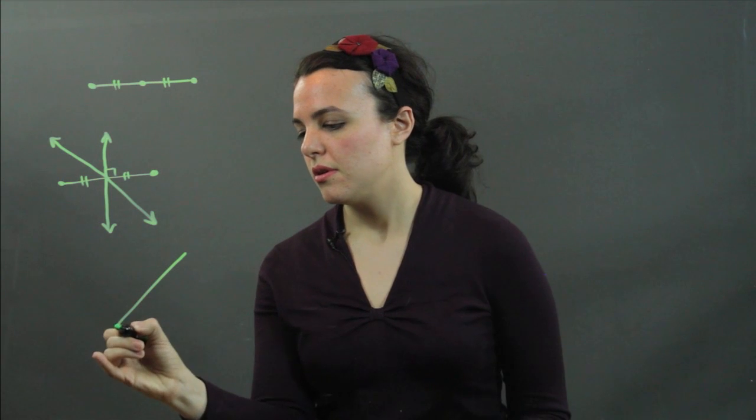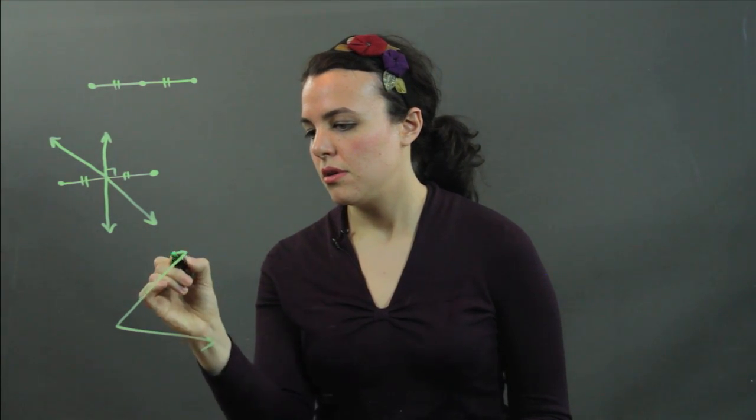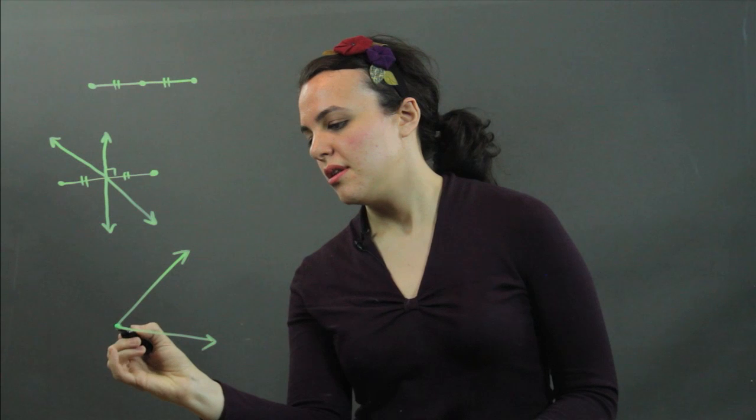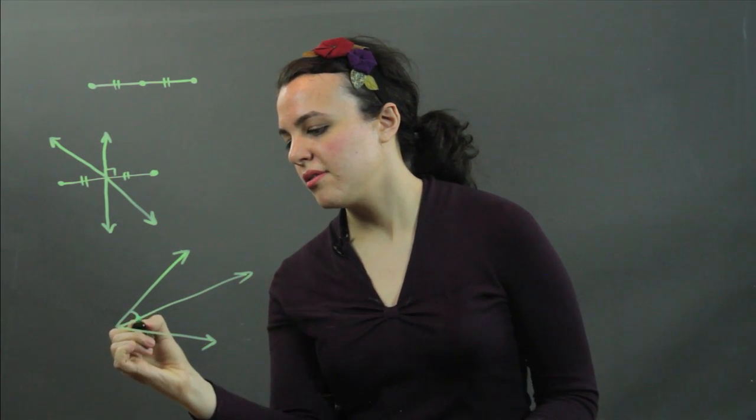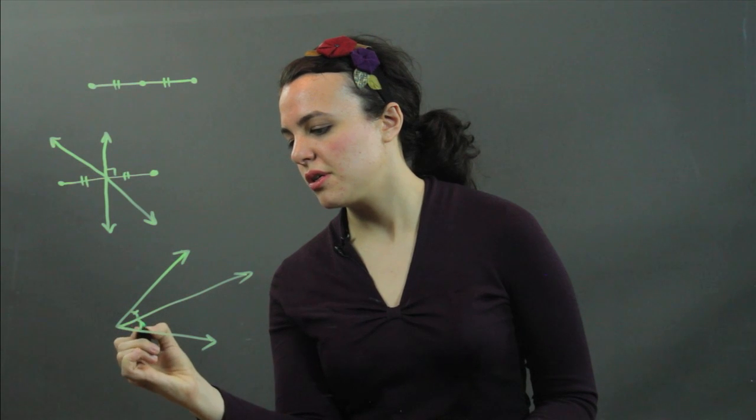If I have an angle, I can draw a bisector that is going to divide my angle into two smaller congruent parts.